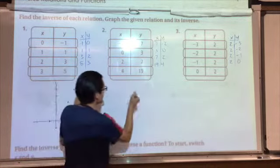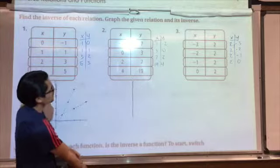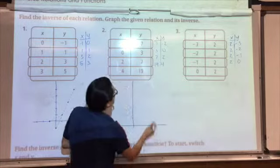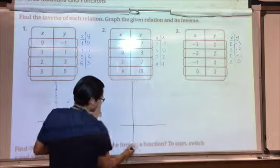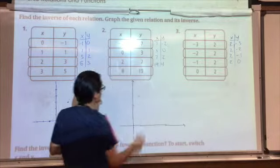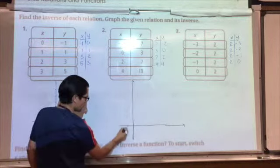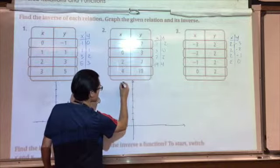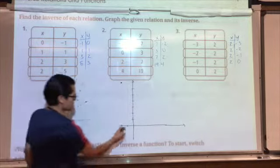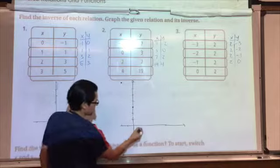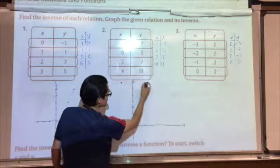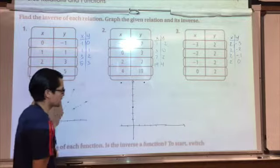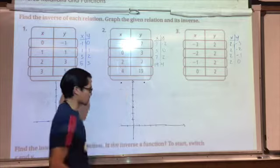Let's graph this one. It looks like everything is positive except for that negative 2 on the x and that negative 2 on the y for that one. So I need a lot of space in that direction. Plotting the original relation: negative 2, 7 — up there; 0, 3; 2, 7; 4, 19, which is way up there so I'm going to leave it at that. That's my original relation.